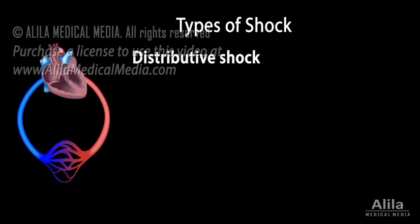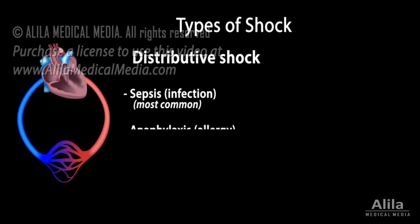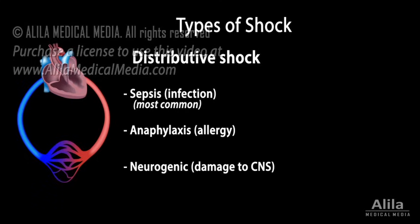Distributive shock results from excessive dilation of blood vessels, or vasodilation, which decreases blood pressure. Distributive shock can have different causes, the most common being sepsis, anaphylaxis, and damage to the central nervous system.